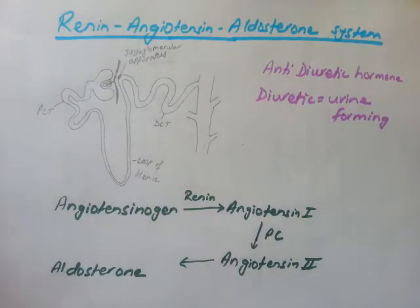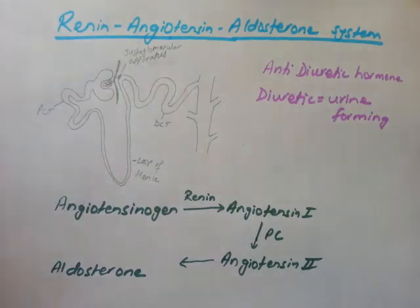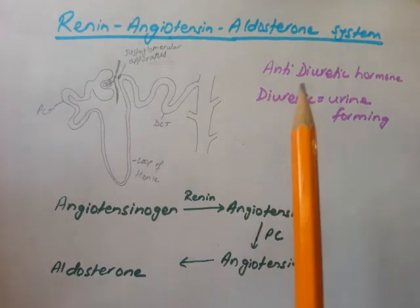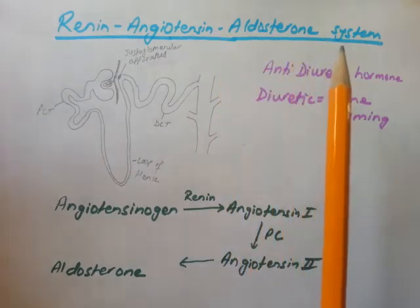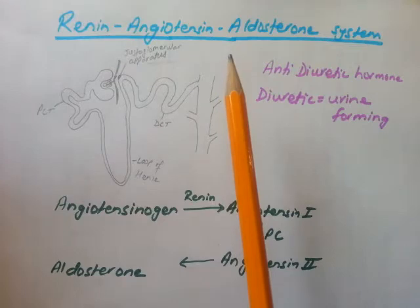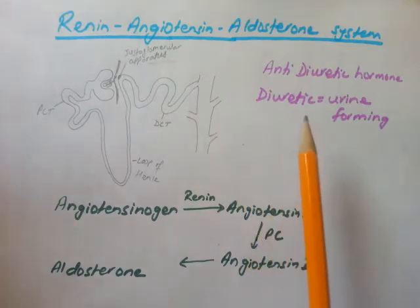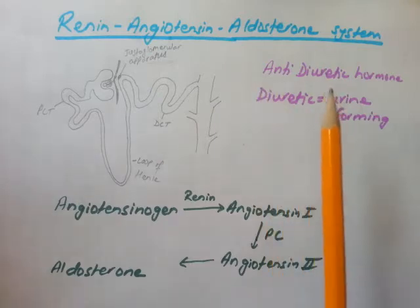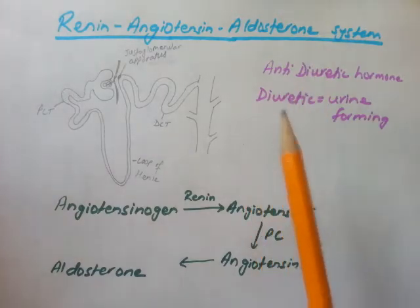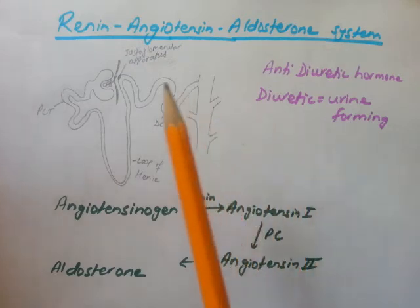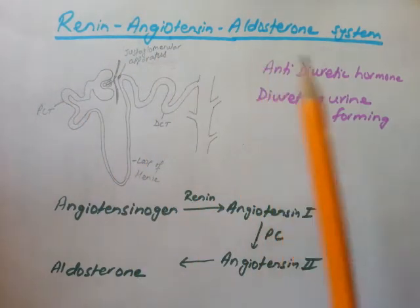In this video we're going to learn about the renin-angiotensin-aldosterone system. This is a chemical pathway that leads to the formation of aldosterone hormone, which is secreted by the adrenal cortex. It is an anti-diuretic hormone — diuretic means urine-forming, so anti-diuretic means anti-urine-forming. Aldosterone leads to conservation of water and less urine formation.